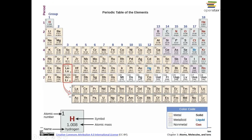Here is the periodic table with everything labeled. The groups are numbered 1 to 18. Groups 1, 2 and 13 through 18 are known as main group elements. Groups 3 through 12 in the center are the transition metals.